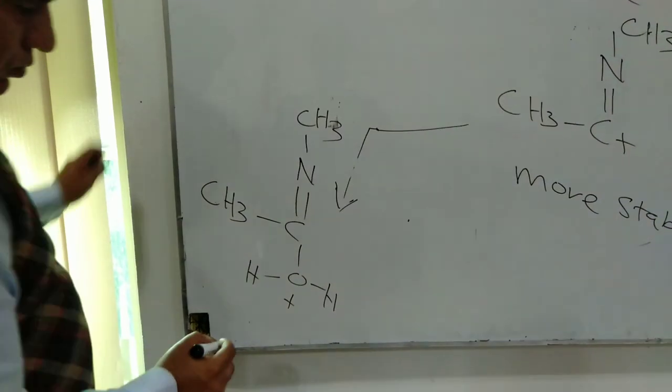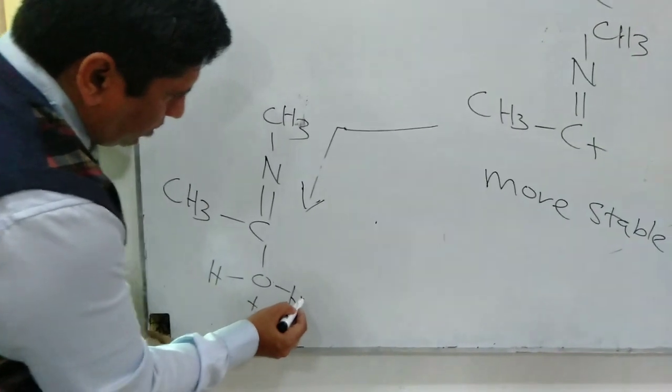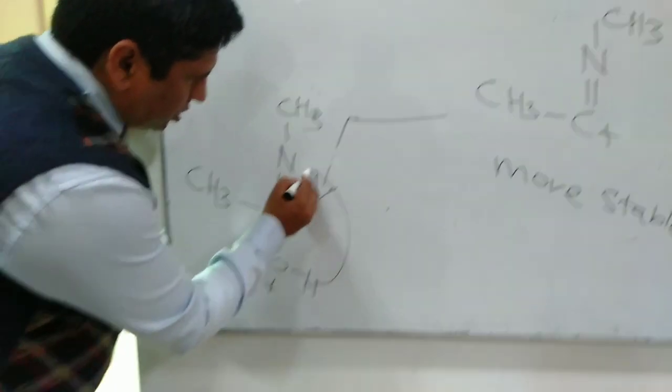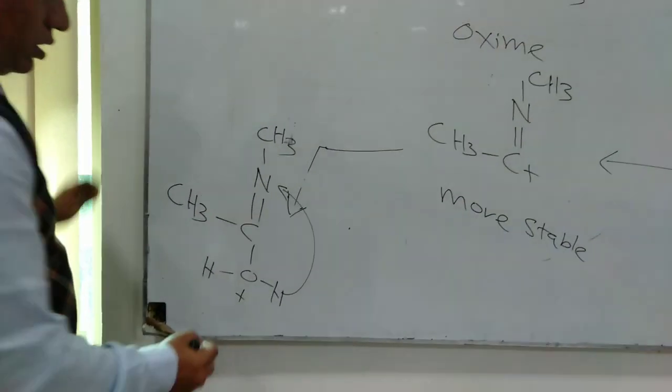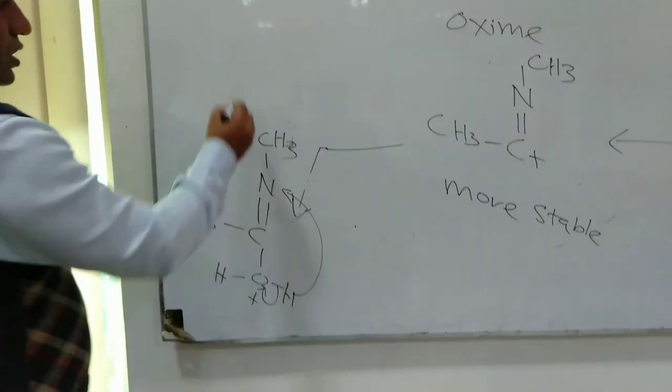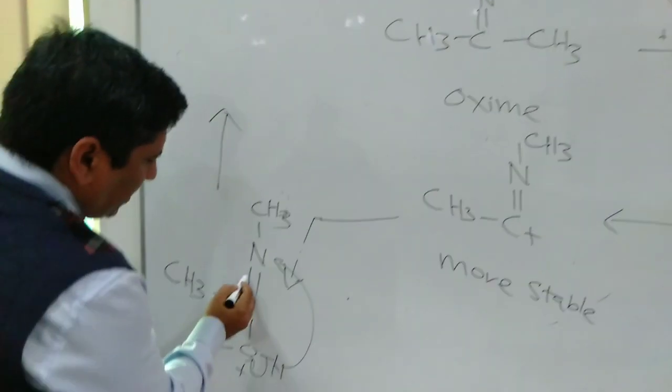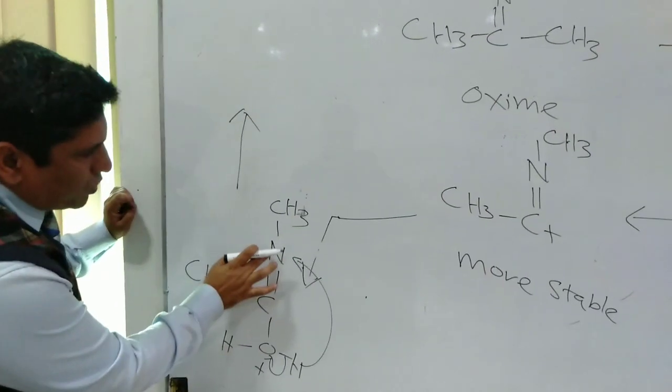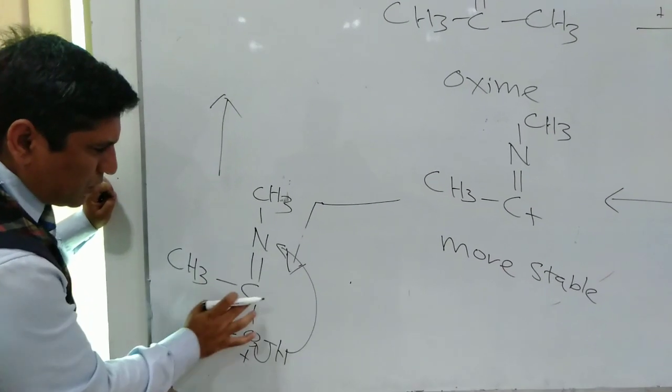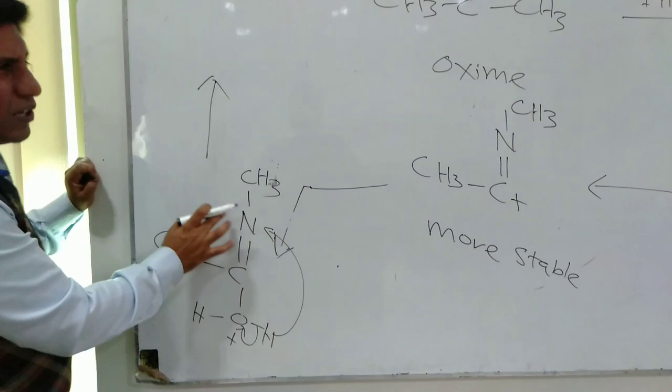In the next step, that proton will migrate towards this nitrogen, satisfying that positive charge. So the next structure will be formed as that pi electron will move towards nitrogen. Nitrogen is more electronegative as compared to carbon, that's why that proton has migrated to that nitrogen atom.